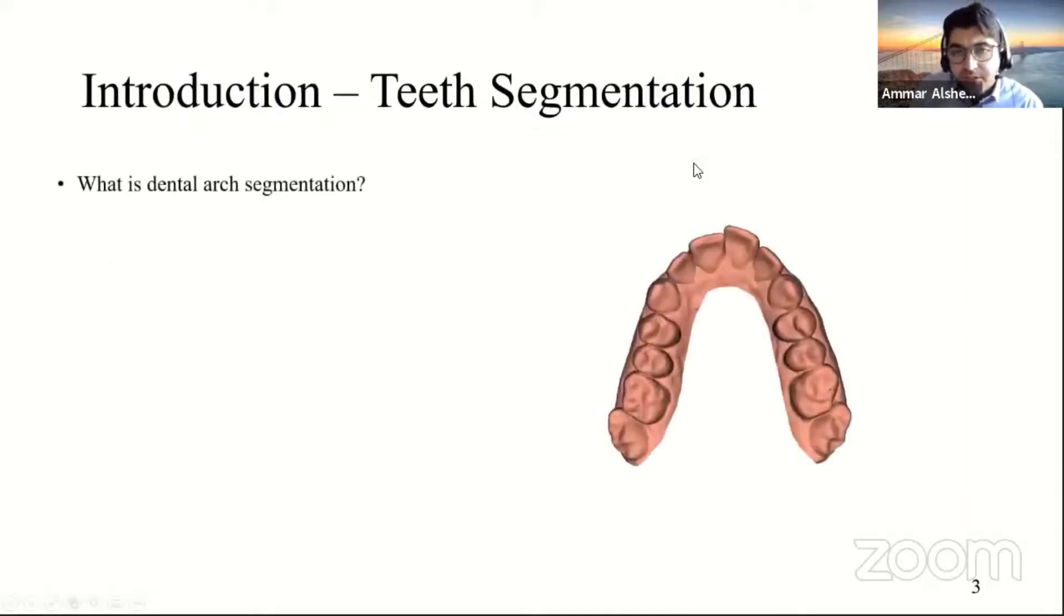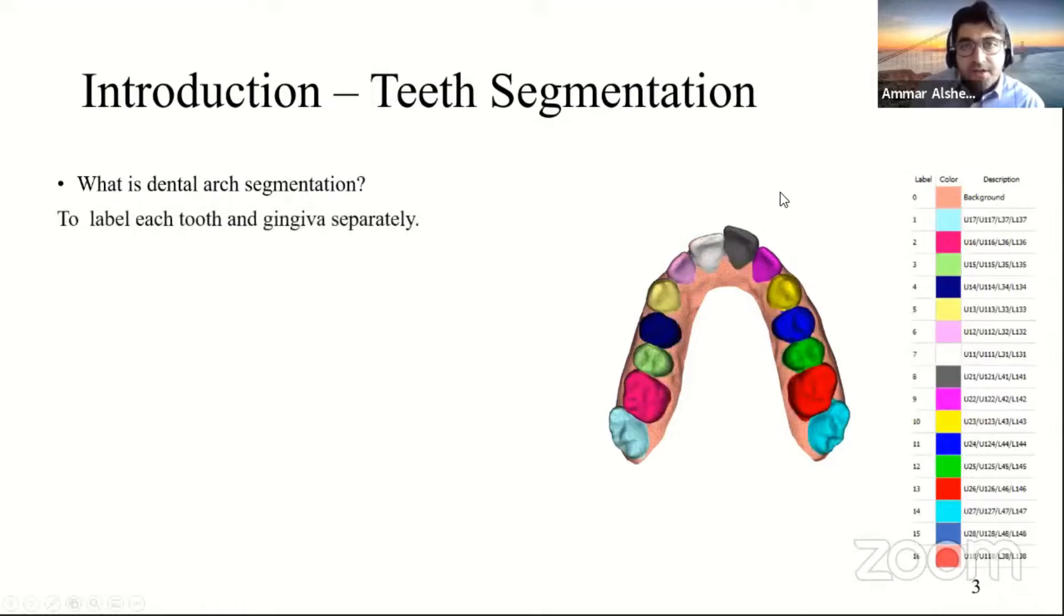So what is dental arch segmentation? Here in this picture, we can see a scan of a dental arch. And segmentation of a dental arch means to label each tooth and gingiva separately. So we would like to provide a semantic segmentation, giving the correct label of every tooth and distinguishing teeth from each other and from the surrounding gingiva. And this is important for applications such as crown generation, diagnosis, and treatment planning.